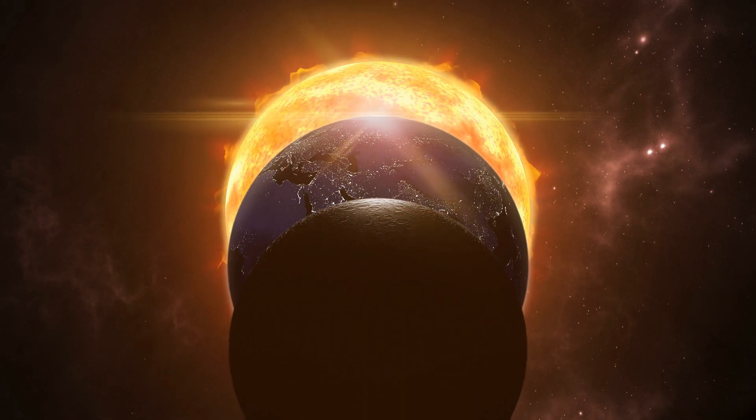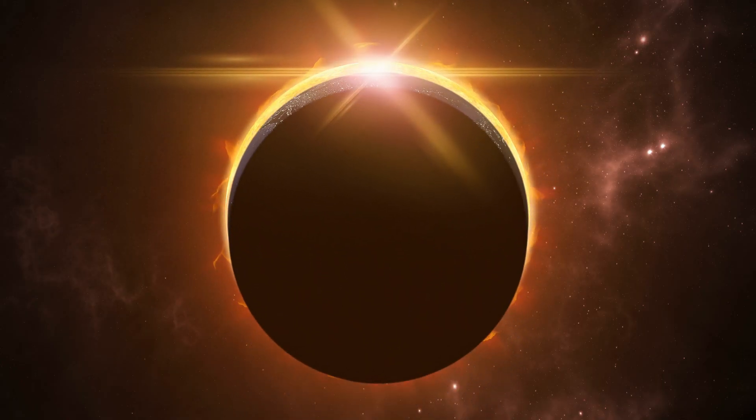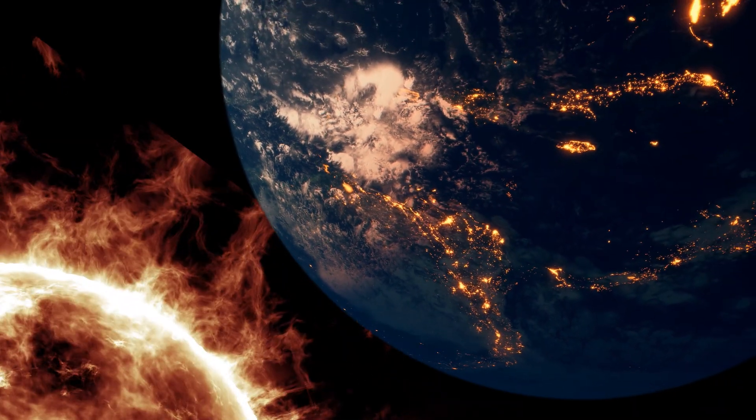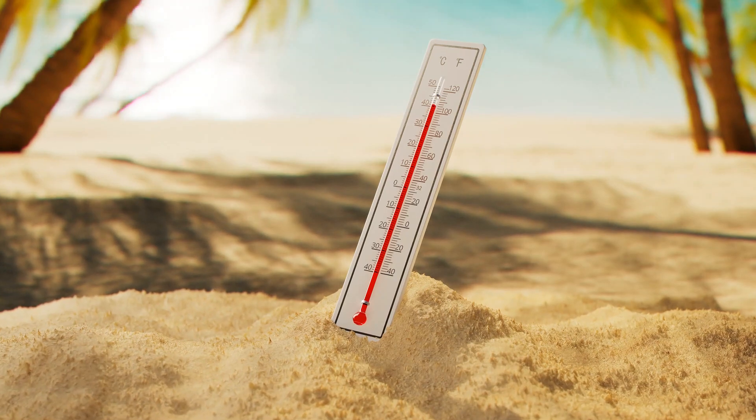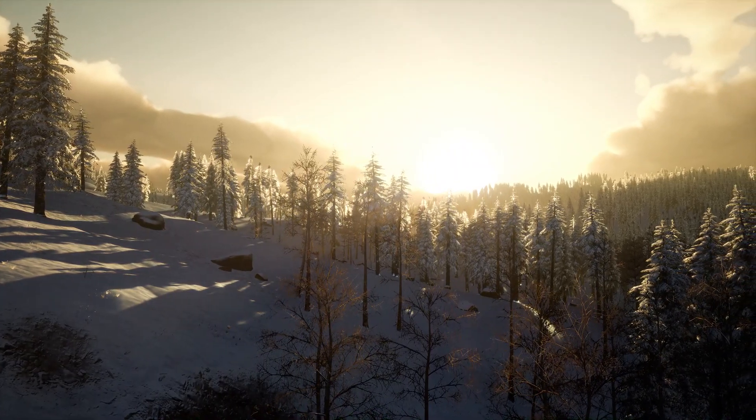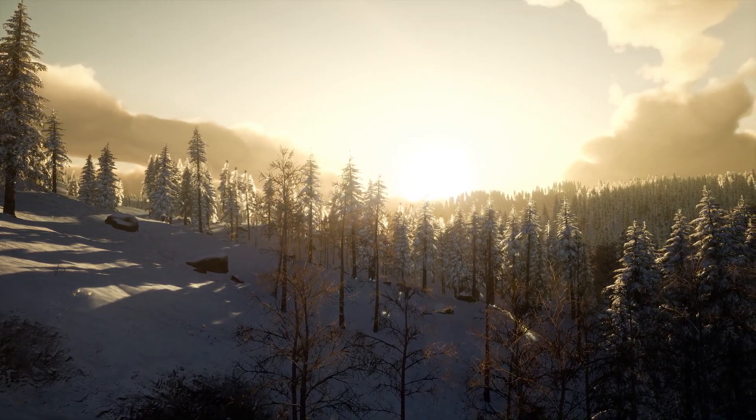The sun, once the massive center of our solar system, now much smaller than our Earth. What would this mean for everything around us? Firstly, temperatures would go on a rollercoaster ride. With a smaller sun, it might get cooler because there's less heat and light reaching us.